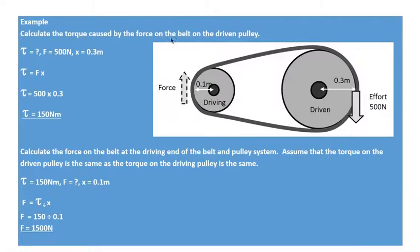So torque is force times distance, so we've got 500 newtons. We've got 0.3 metres there to the pivot point. So 500 times 0.3 gives me 150 newton metres. So that's the torque on that belt there.